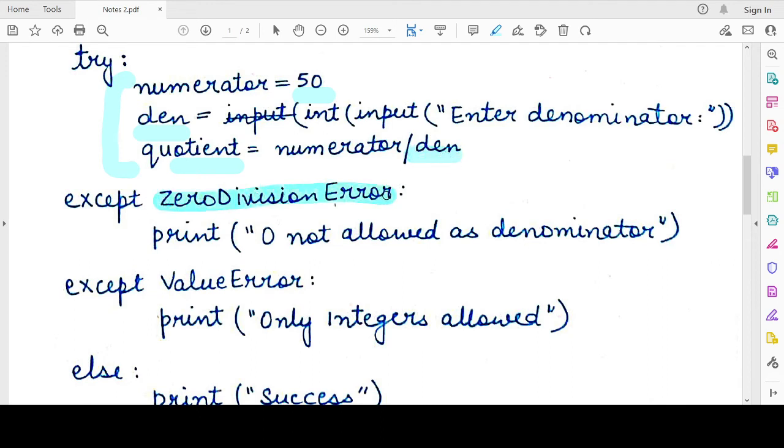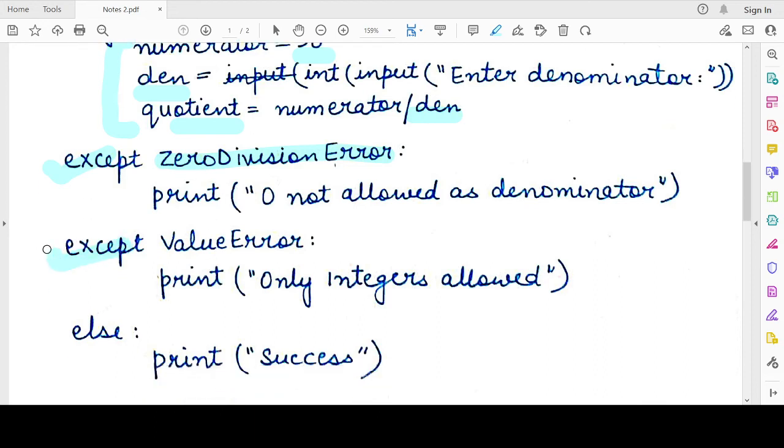Now if the denominator entered by the user is 0, then the zero division error will be thrown and this except clause will be executed. Otherwise, if a value error occurs, that means an incorrect value has been specified, then the second except block will be executed.